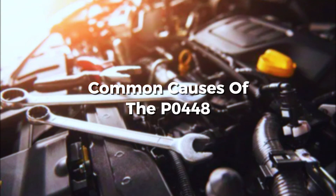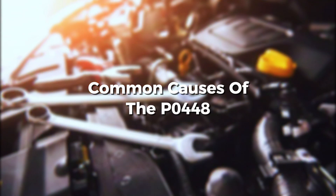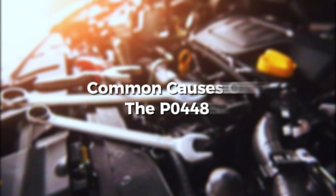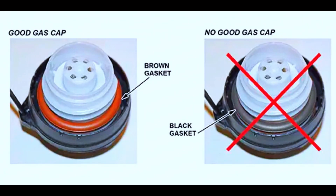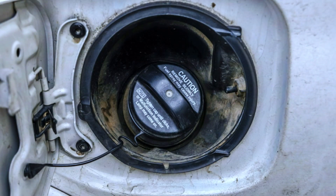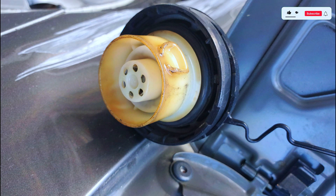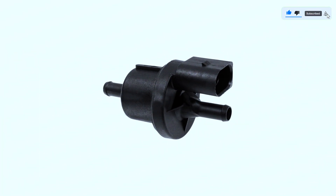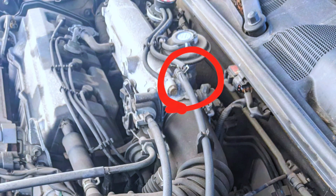There are a few culprits that commonly cause the P0448 code — let's break them down. First, a loose or faulty gas cap. This is the most common reason. Make sure your gas cap is clicked shut all the way. Some caps have a rubber seal that can wear out over time, and you can try replacing the cap for a few bucks. Second, the EVAP purge control valve. This valve controls the flow of vapors into the engine and can get stuck or malfunction — we'll check for functionality later.